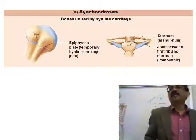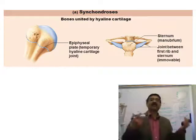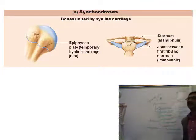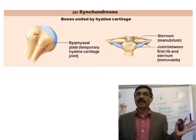Two types of cartilaginous: synchondrosis and symphysis. Synchondrosis — bones attached by hyaline cartilage. Symphysis — bones attached by fibrocartilage. The intervertebral discs are fibrocartilage, and the pubic symphysis is also fibrocartilage. So these are both symphysis.